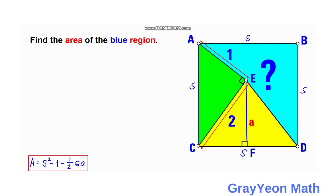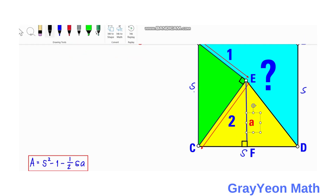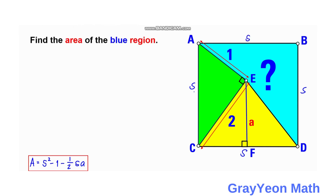We just need to find the value of A. We can draw a line and project it from point E downward to determine this unknown height.